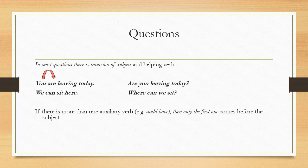If there are more than one helping verb in a sentence, then only the first one comes before the subject. For example, I could have reserved a seat — we observe that we have two helping verbs: could and have. If you are changing it into a question, then only the first helping verb, that is could, comes before the subject I. So always remember: if there are more than one helping verb in a sentence and you are making it into a question, only the first one is moved before the subject.